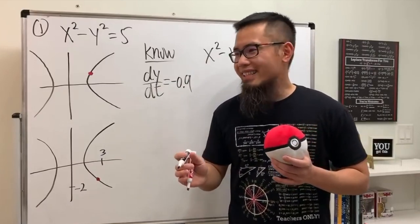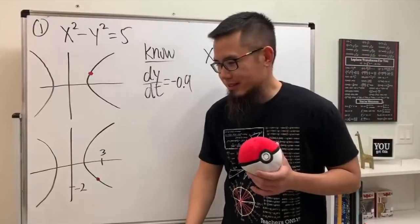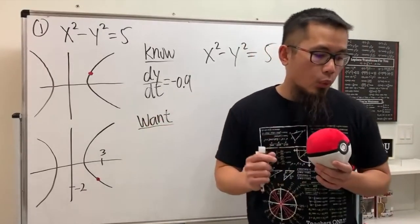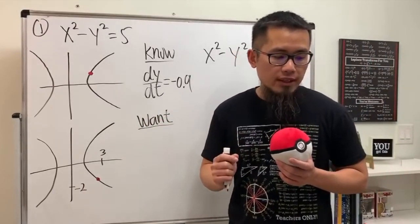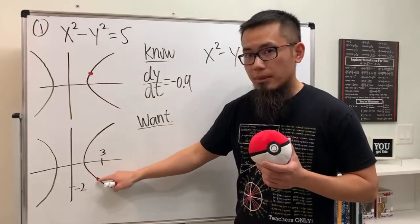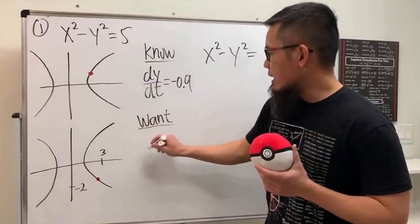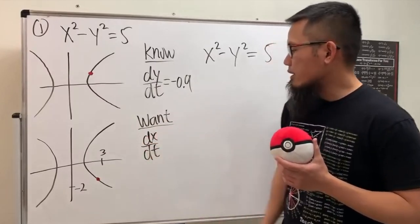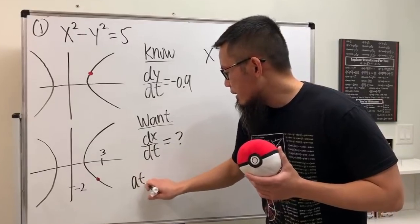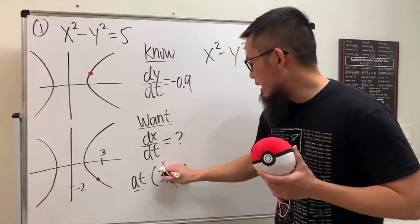Don't bother putting units on intermediate steps unless there's a unit conversion issue. We know the equation x² - y² = 5 and we know dy/dt = -0.9. What we want to know is how fast the x-coordinate is changing — that's dx/dt. The point is moving downward and to the right, and we're at the instance when x = 3 and y = -2.